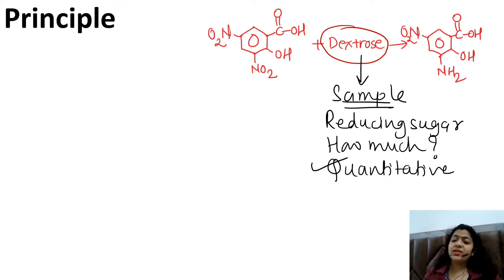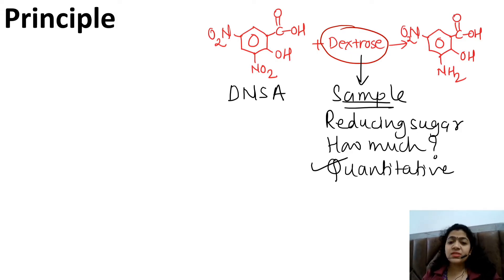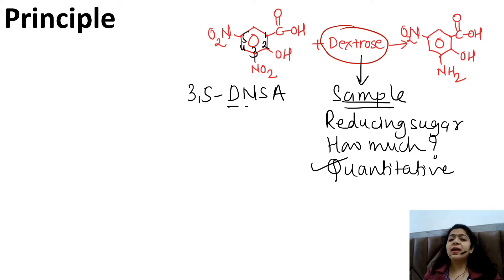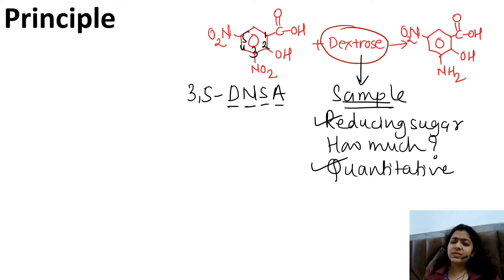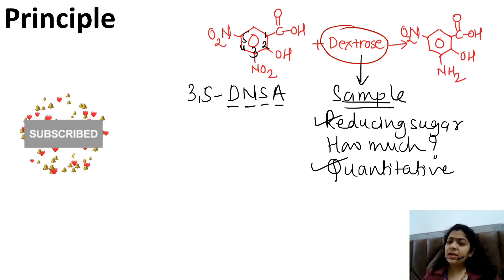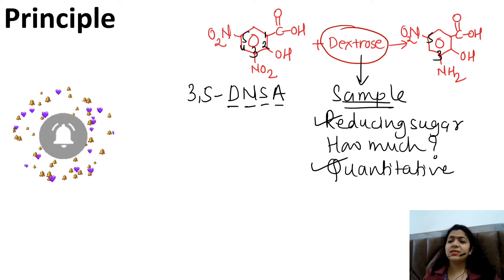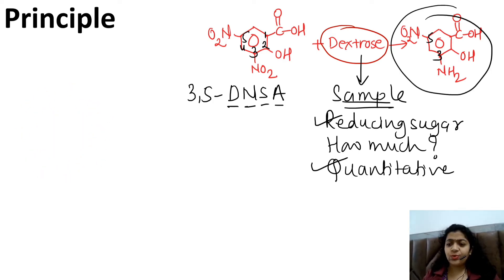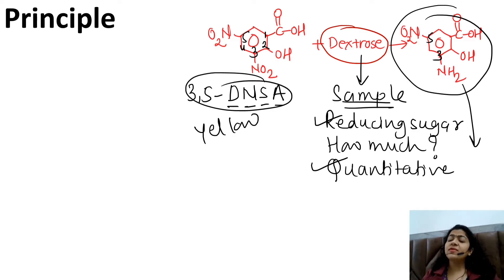This dextrose estimation, that is quantitative estimation, will be done using a reagent called DNSA. What is DNSA? If you number the positions 1, 2, 3, 4, and 5, it is specifically 3,5-dinitrosalicylic acid. Since dextrose is a reducing sugar, it has the ability to reduce many organic compounds. During the procedure, there will be some heating, and during that time DNSA gets converted to 3-amino-5-nitrosalicylic acid. The original color of DNSA is yellow, whereas the color of this product is orange to brown.